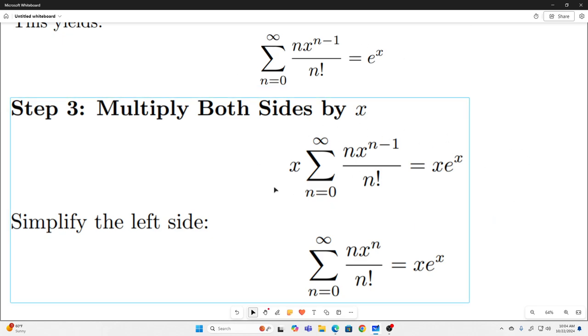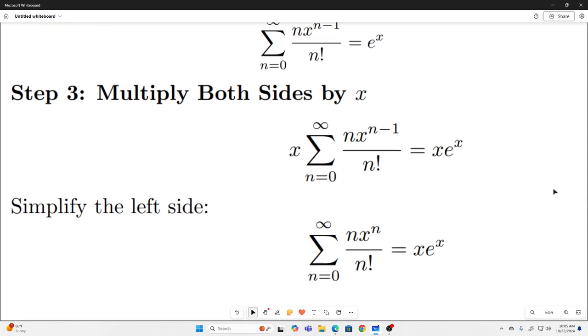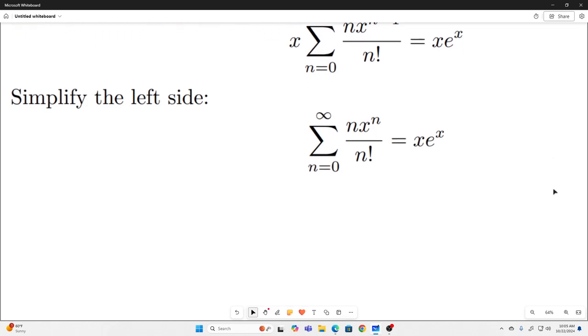And then we bring that x inside the sum sign since it doesn't depend on n, and that'll just get rid of that negative 1 exponent right there. So now we have this.